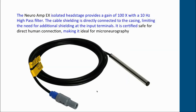The head stage — a stainless steel cylinder and cable — provides preamplification with a gain of 100 and a high-pass filter of 10 Hz. The cable shielding is directly connected to the casing, which limits the need for additional shielding of the input terminals. The input terminals are very high impedance and, importantly, they have input protection circuitry.